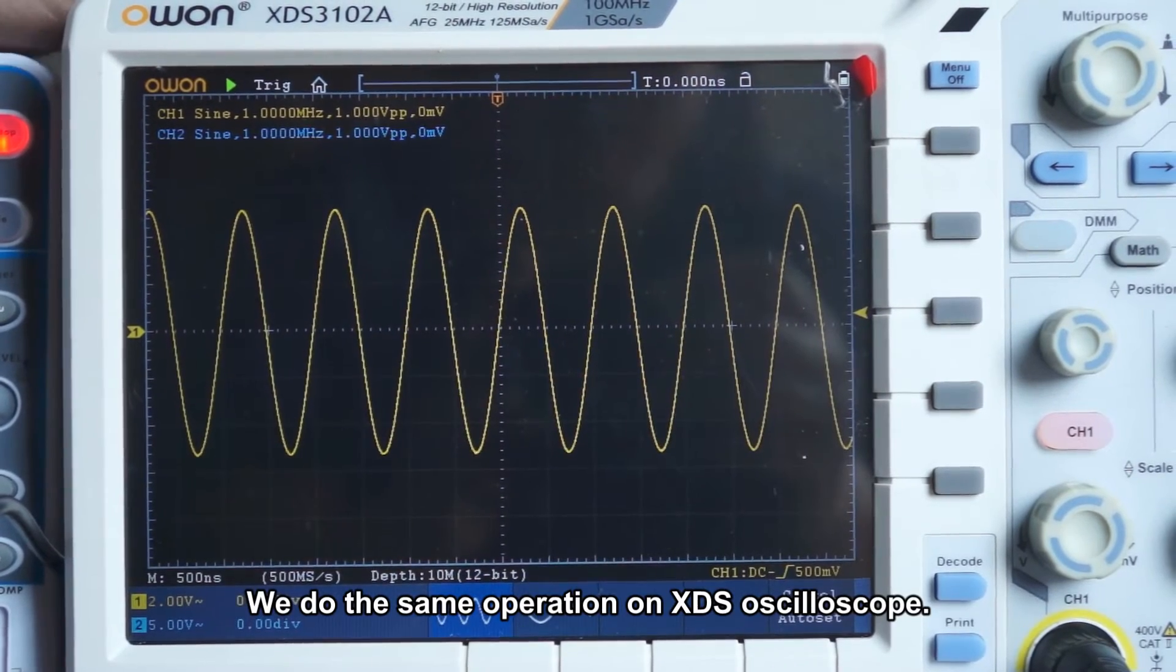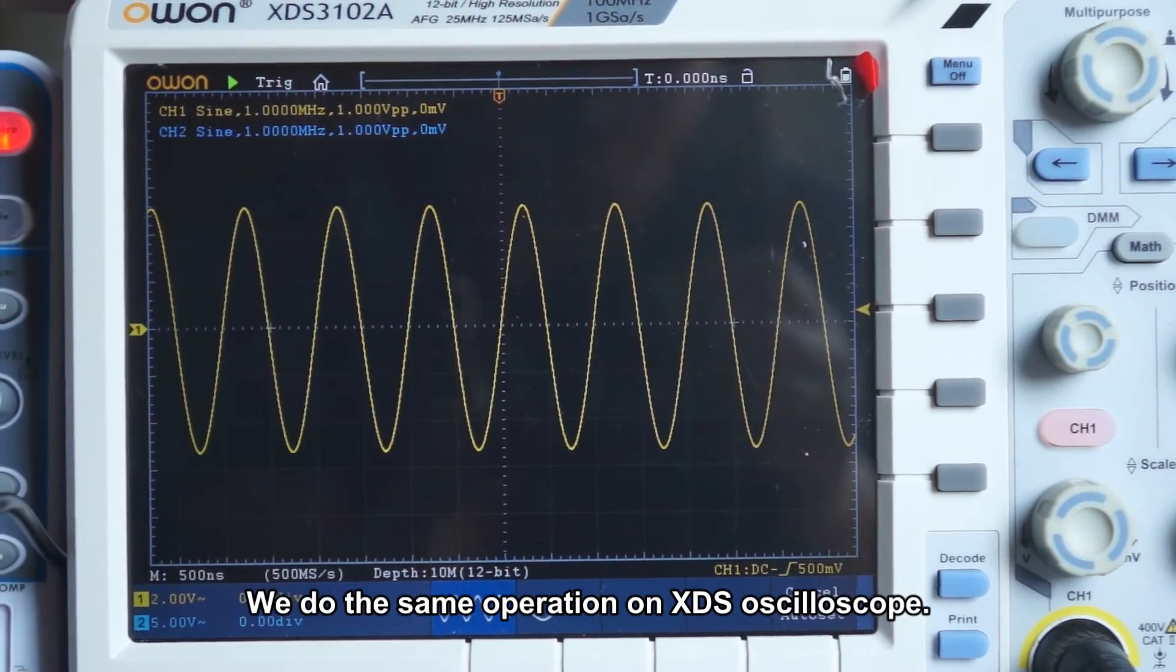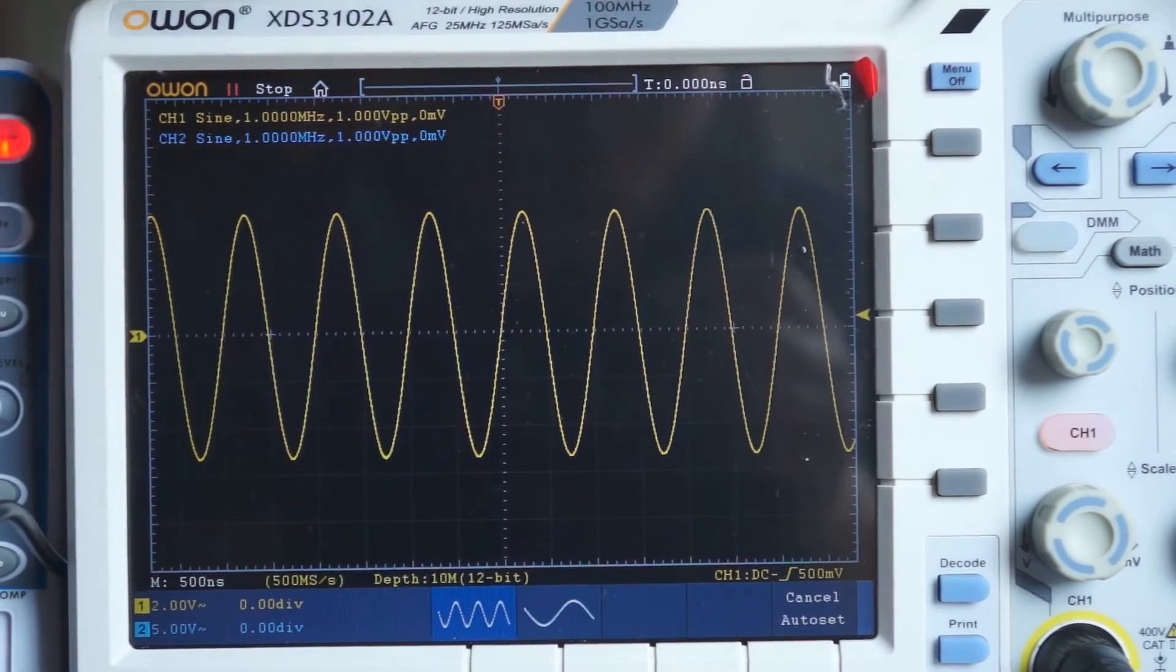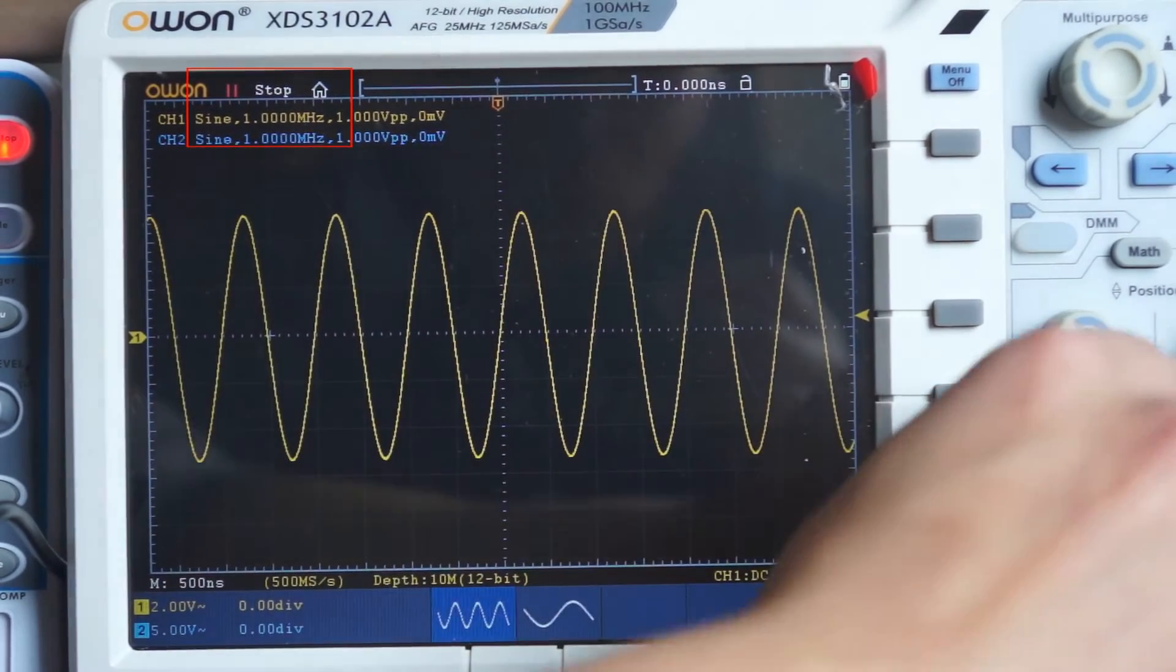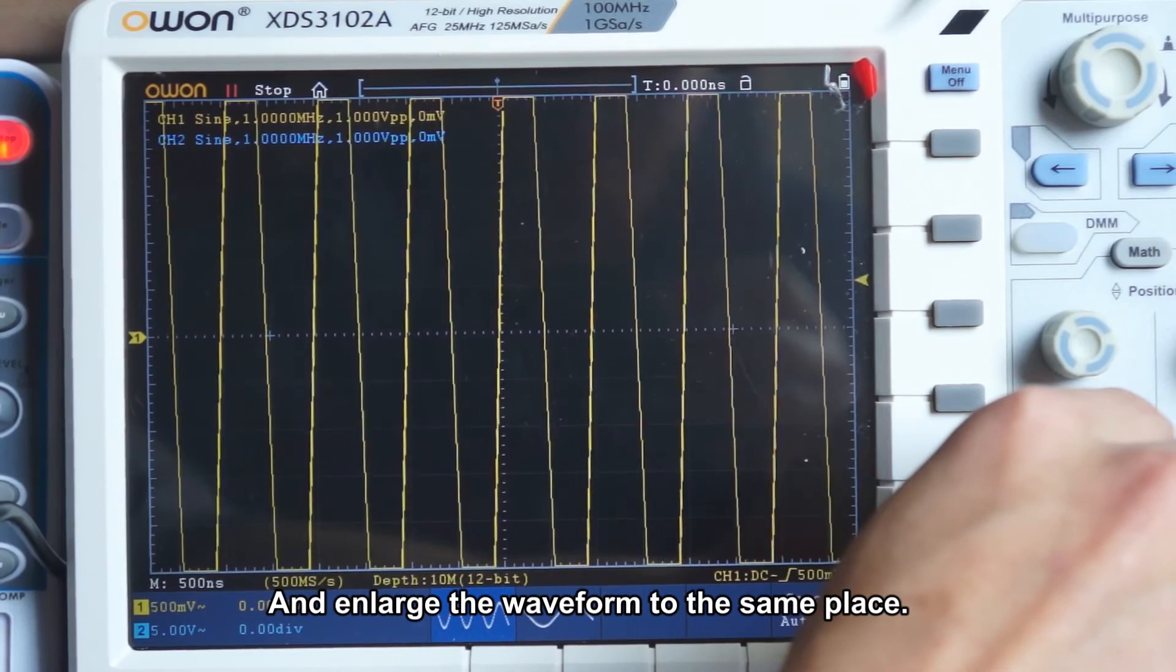We do the same operation on XDS oscilloscope. Stop sampling and enlarge the waveform to the same place.